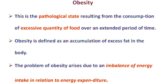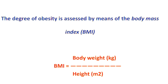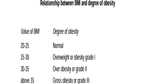Coming to overnutrition: when a person takes more calories than required, those calories accumulate in the form of fat, resulting in obesity. The problem of obesity is due to an imbalance of energy intake relative to energy expenditure. To find out whether a person is obese, you can use the formula: body weight in kg divided by height in meters squared. This BMI can be used to classify obesity into 3 grades.